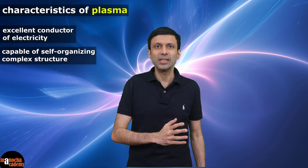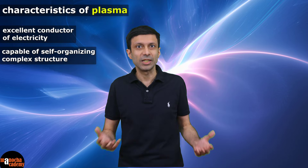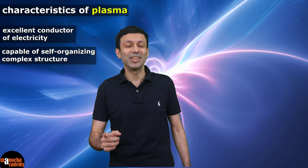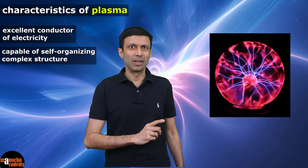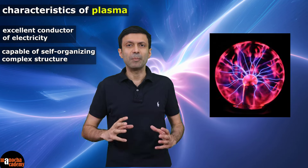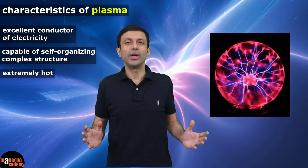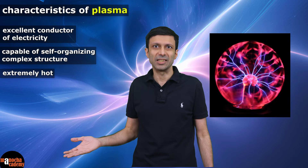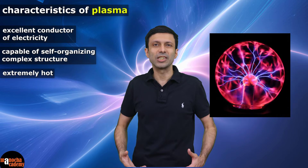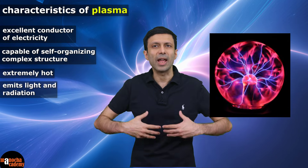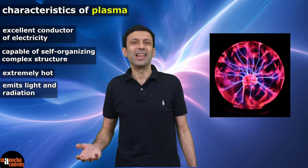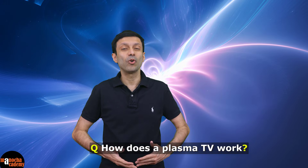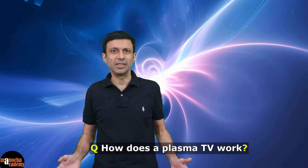Plasma has the ability to self-organize into complex structures such as filaments and vortices, which can lead to interesting patterns like you can see in the plasma globe. Plasma can be extremely hot, with temperatures ranging from thousands to millions of degrees Celsius. This high energy causes plasma to emit light and radiation, like the Sun and all the stars do.